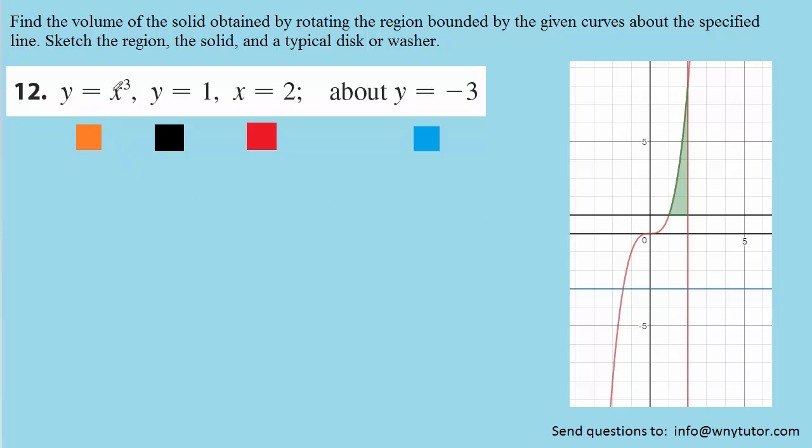So the curve y equals x cubed is colored in an orangish color, so it's this curve right here. We have y equals 1, which is a black color, it's a horizontal line cutting straight across and passing through y equals 1.